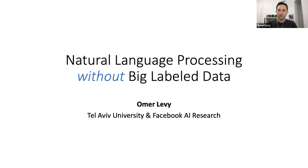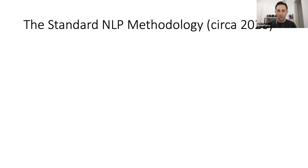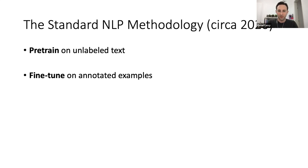Let's start by having a look at how standard NLP models are trained nowadays. We first pre-train a model, like a large transformer, and we train it on massive amounts of unlabeled text — like Wikipedia, all the news in the world, all the books in the world, and all the blog posts and everything. And once we've done this massive pre-training process, we then fine-tune it on annotated examples, and then test the model.